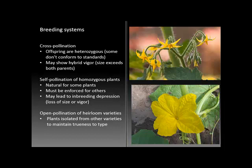Unless breeding is carefully controlled, crossing of hybrid plants will produce offspring that do not conform to the standards for that plant. On the other hand, cross-pollinated plants are likely to show hybrid vigor, where the size and vitality of the offspring exceeds both parent plants. Cross-pollination therefore has both benefits and limitations. Self-pollination for homozygous plants is natural, and in crops such as grains and tomatoes there is a high degree of self-pollination.